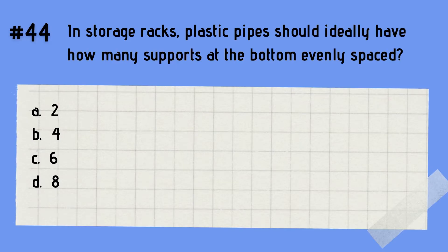Question 44: In storage racks, plastic pipes should ideally have how many evenly spaced supports at the bottom? A. 2. B. 4. C. 6. D. 8. The answer is C — 6. Don't forget that in storage racks, plastic pipes should have 6 evenly spaced supports at the bottom.